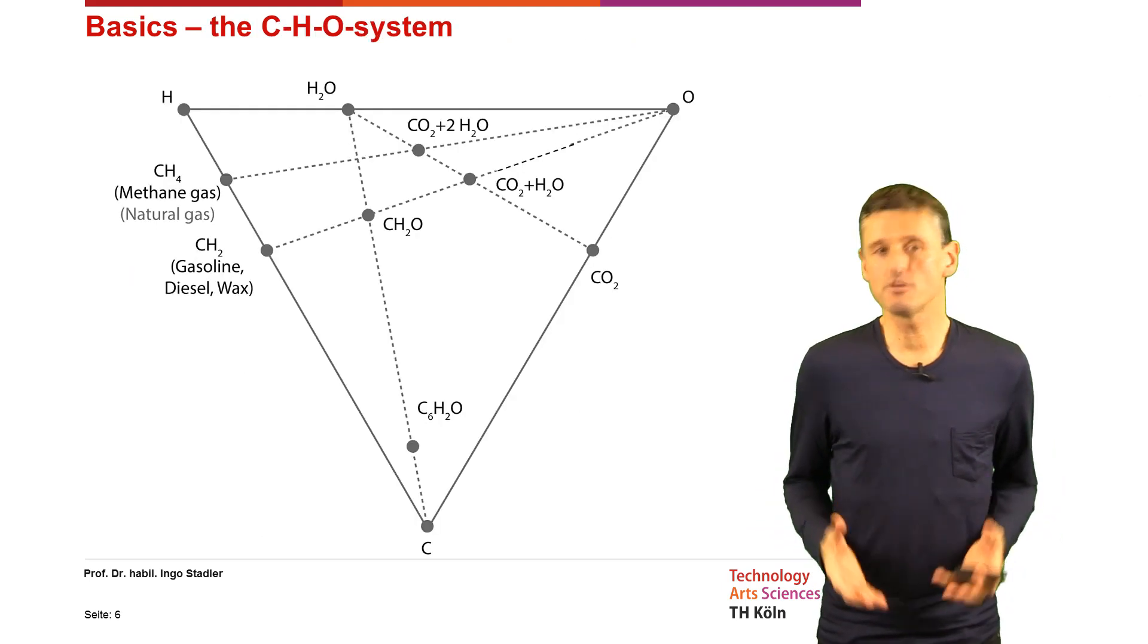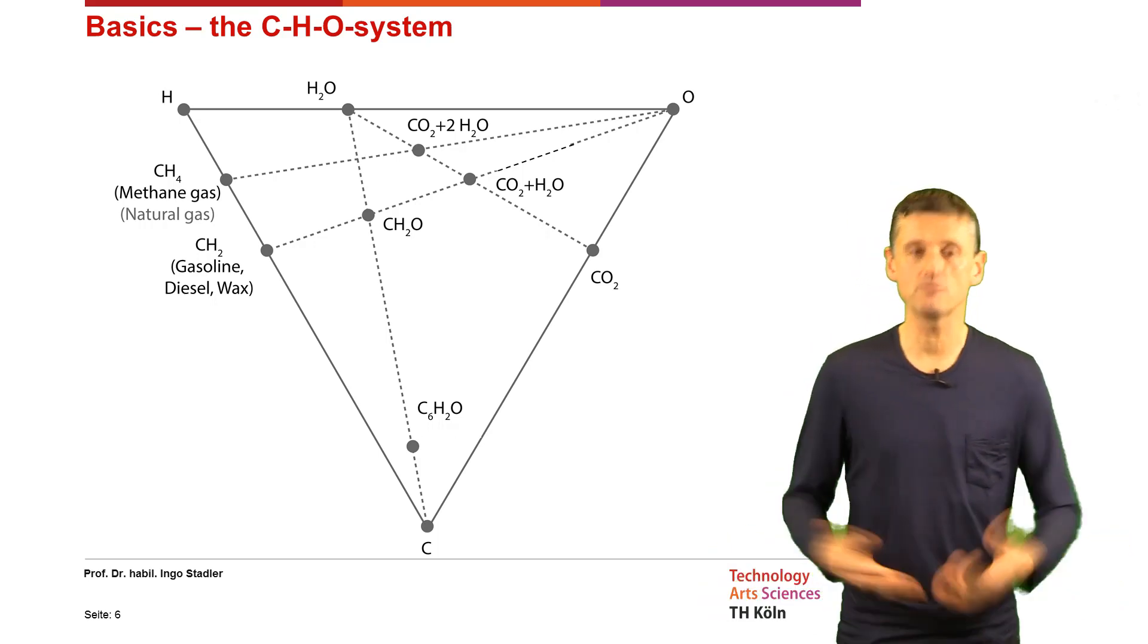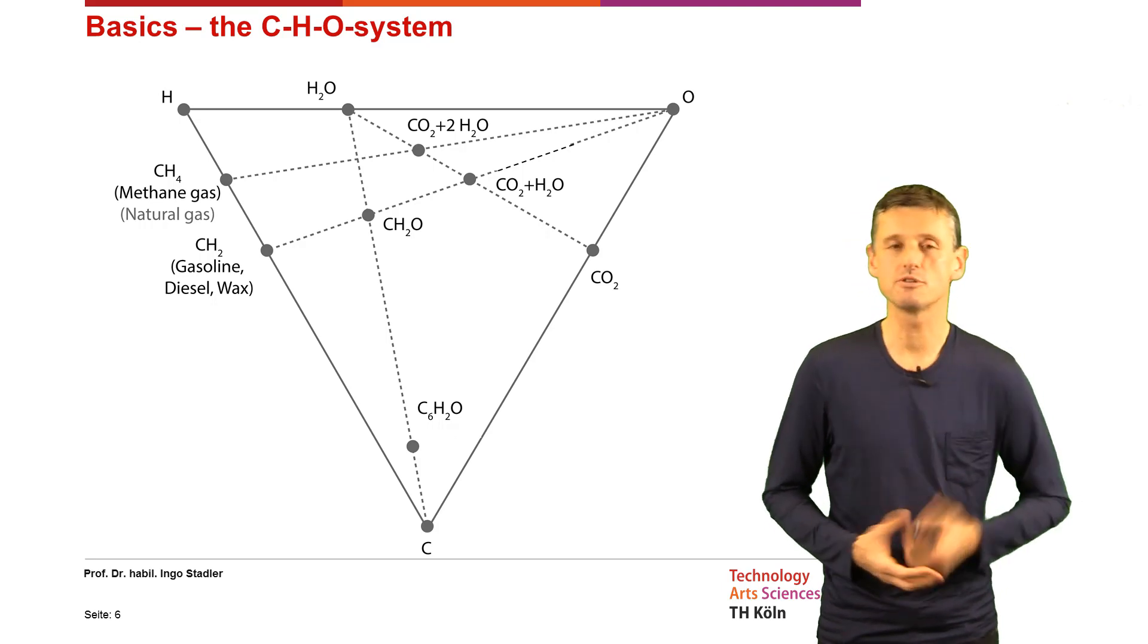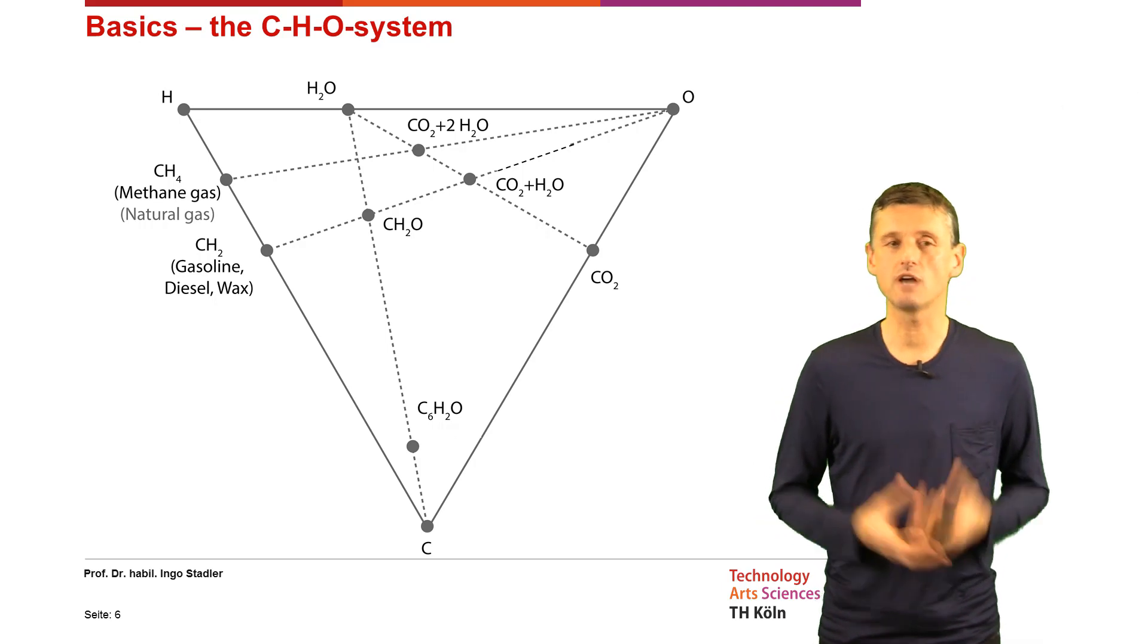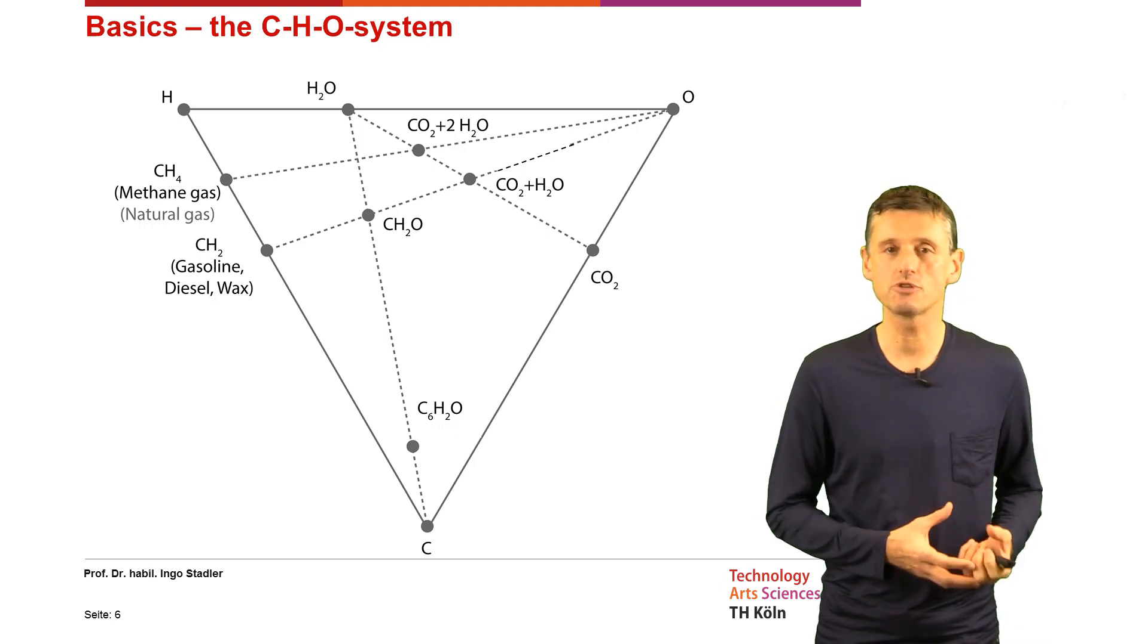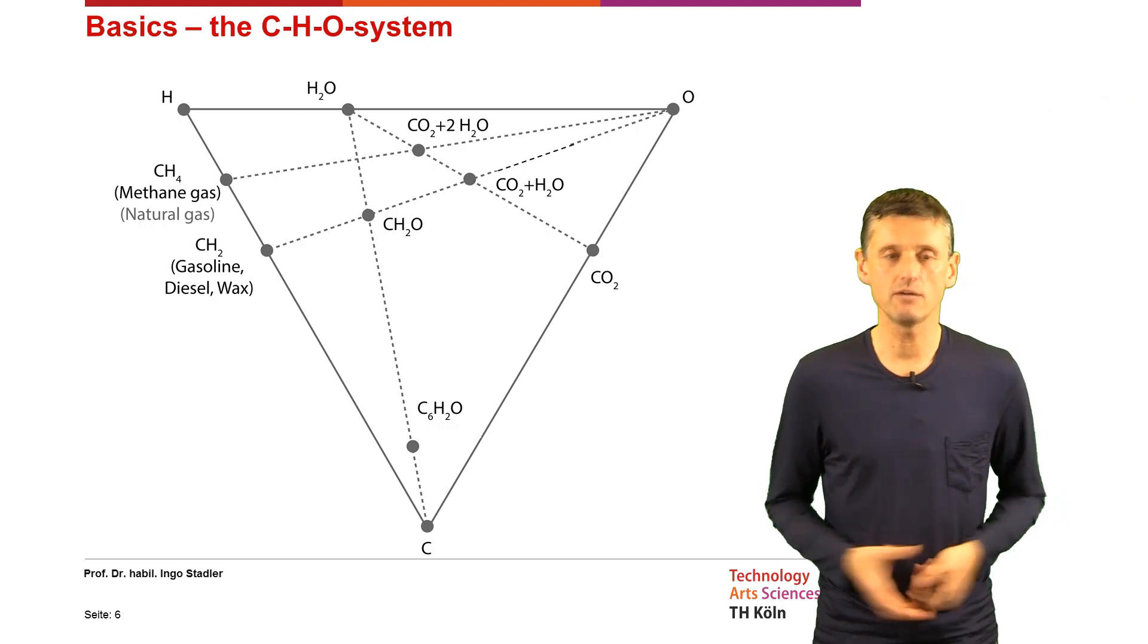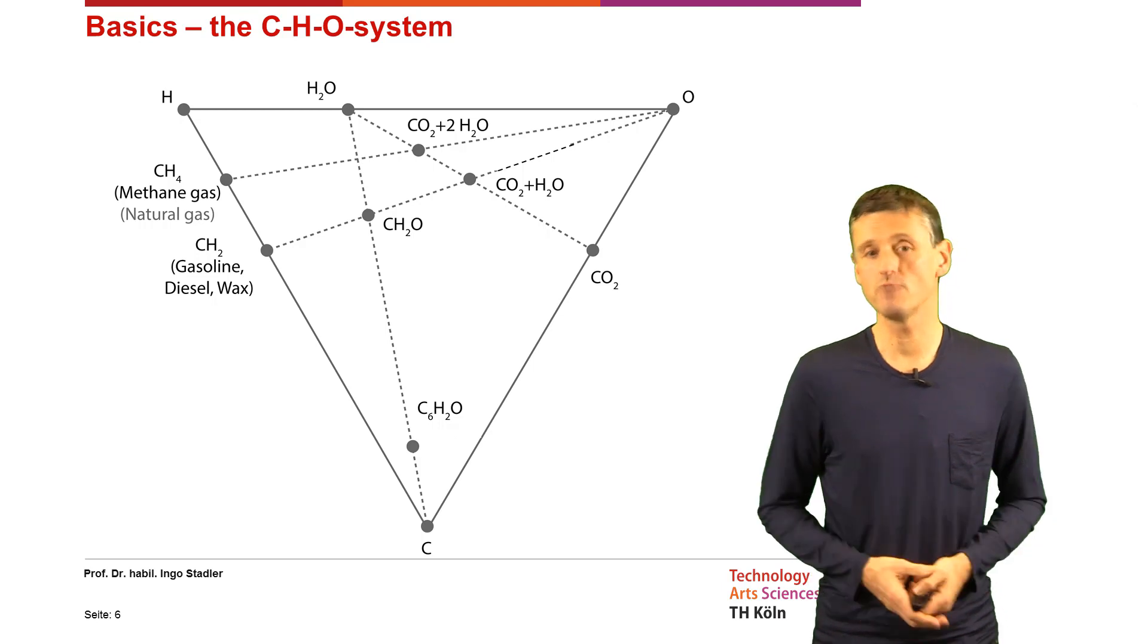So going for the basics, when we look to our world, we have hundreds of chemical elements available. But in the energy system, it's almost only three we are really using, and that is the carbon, the hydrogen, and the oxygen. And within this triangle, all our nowadays energy system more or less is working.